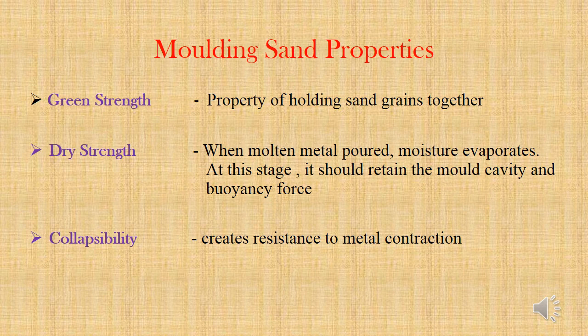Next molding sand property is green strength, which is the compressive strength of molding sand. This compressive strength will increase with increase in moisture content. Next is dry strength. When the molten metal is poured into the mold, the moisture content in the molding sand evaporates, so the sand becomes dry. At this stage, the dry sand should have the ability to retain the mold cavity and face the buoyant force of liquid molten metal. This is called dry strength. Finally, collapsibility — the ability of molding sand to decrease in volume to some extent under the compressive force developed by the shrinkage of metal during contraction.